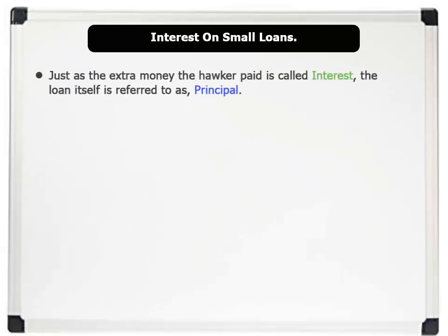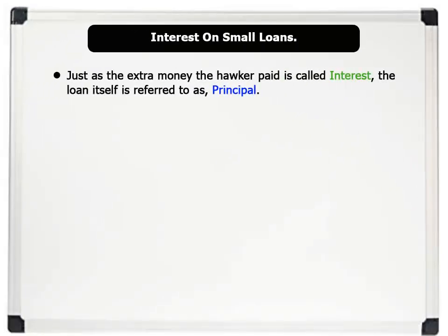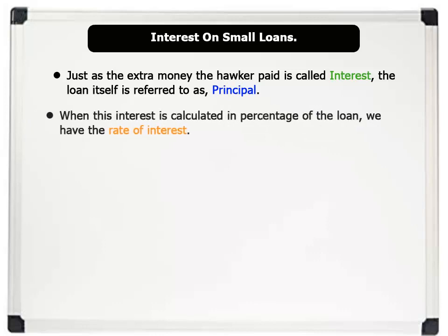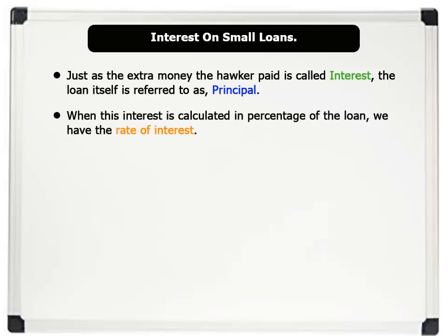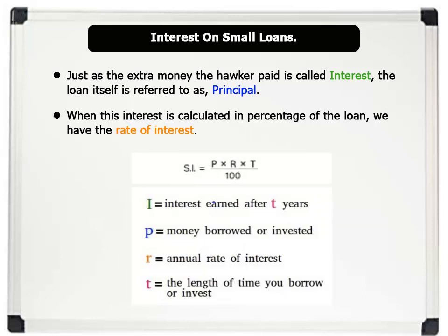The extra money the hawker paid is called interest. The loan itself is referred to as principal. When this interest is calculated as a percentage of the loan, we have the rate of interest. Generally, simple interest can be calculated using the formula on the board, where I represents the interest earned after a length of time in years, P represents principal — money borrowed or invested, R represents the annual rate of interest, and T is the length of time you borrow or invest.